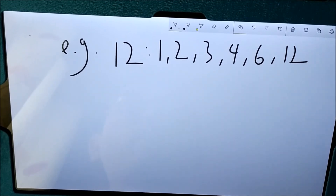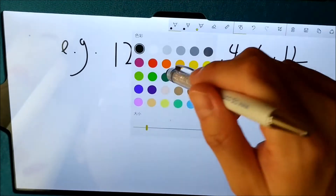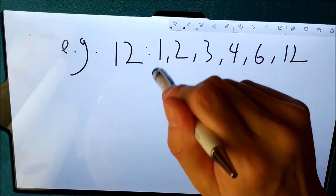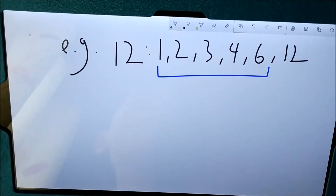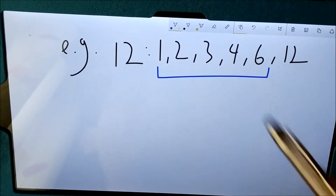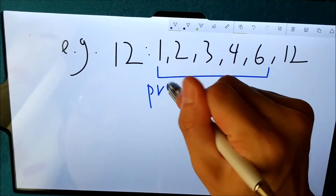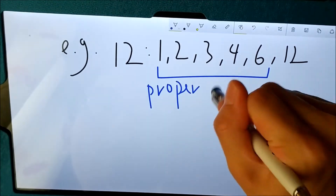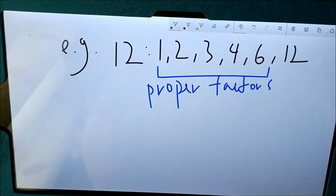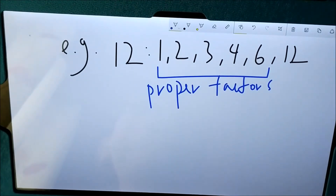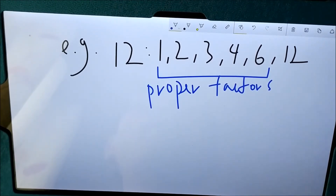Now we are not talking about all the factors, but we are going to talk about the first 5 factors for 12. Why? Because these 5 numbers are not including 12 itself. So we will call them the proper factors of 12. That means that if the factors are less than the number itself, we will call those factors proper factors. So do you have any problem about proper factors? If not, now we can go to see what is the meaning of perfect numbers.